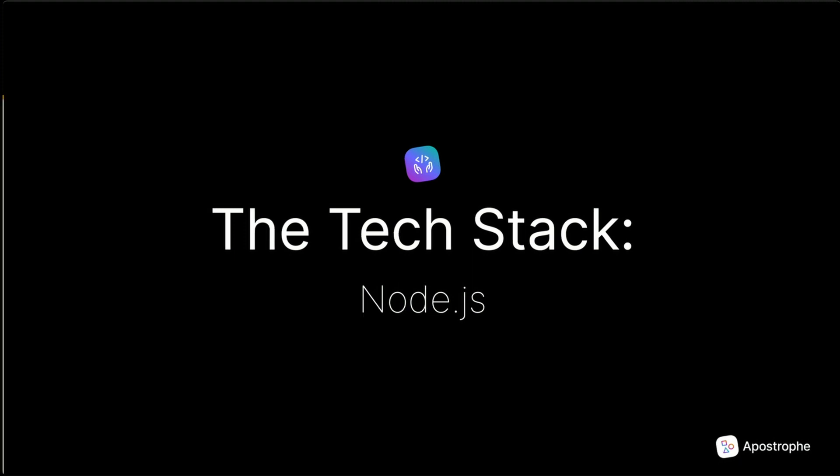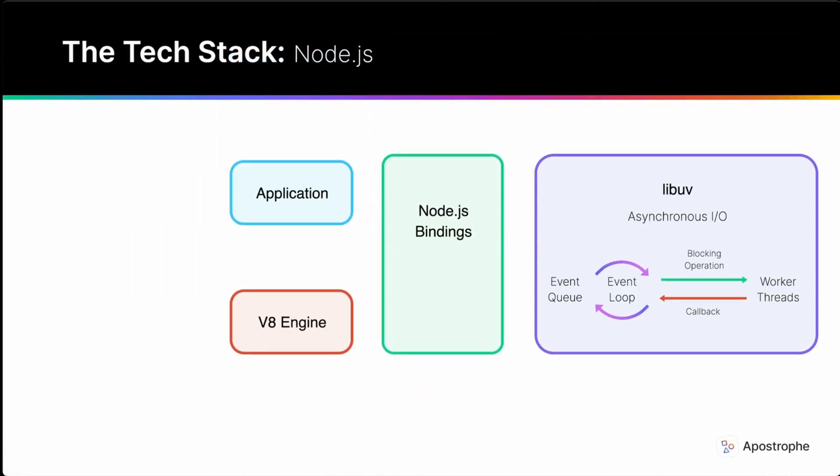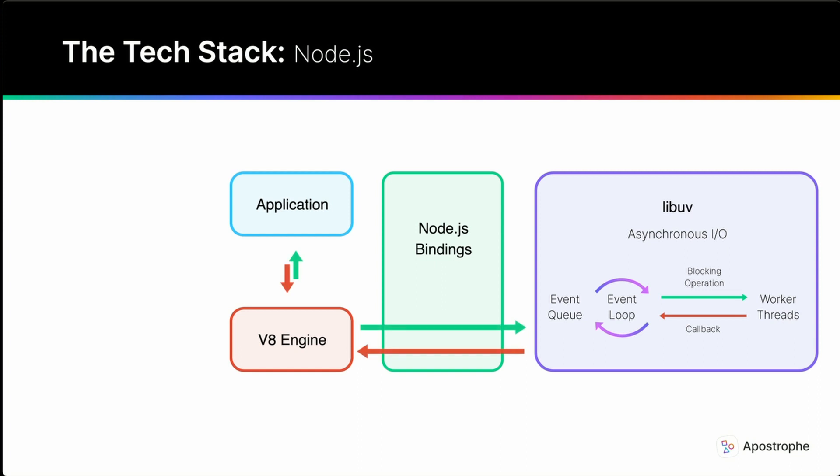Here are some of the main features of Node.js. It's cross-platform. Node.js can run on a variety of operating systems, including OSX, many flavors of Linux, Solaris, FreeBSD, and many more. While it can run on Windows, it's highly recommended to use the Windows Subsystem for Linux for development.